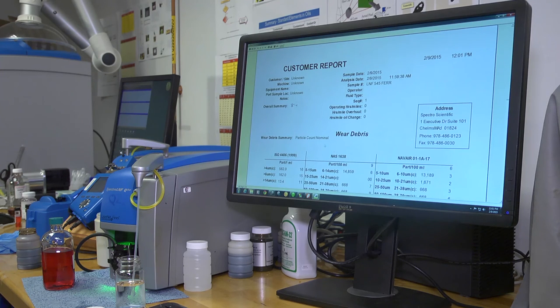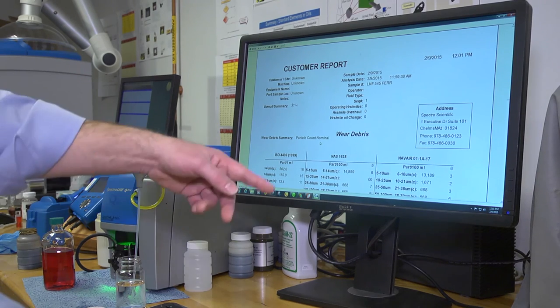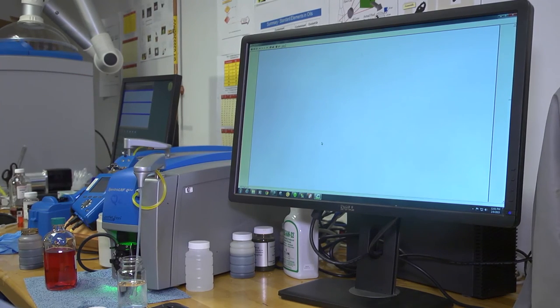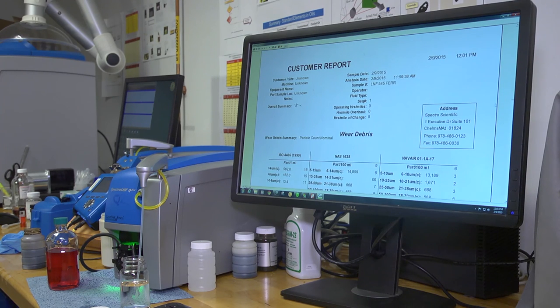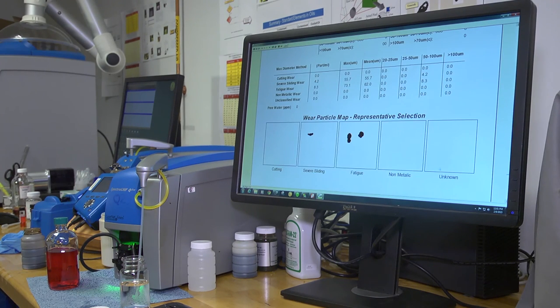And this is a standardized report, which gives you the ISO 4406 codes, the NASA and the NAVAIR codes as well, the particle count and size distribution. Some representative sample maps as well, as well as the distribution of the individual wear counts.